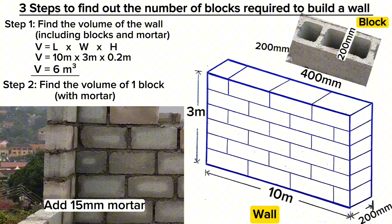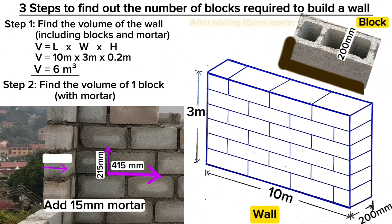Considering mortar thickness of 15 millimeters—the standard should be 10 millimeters, but this sometimes becomes difficult to maintain by masons and can even go up to 20 millimeters—the length increases by 15mm to get 415mm, the height increases by 15mm to get 215mm, and the width remains the same at 200mm.